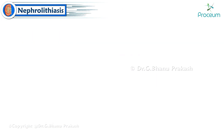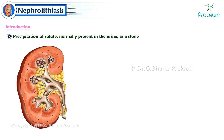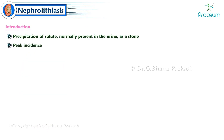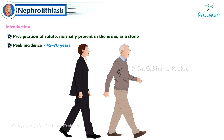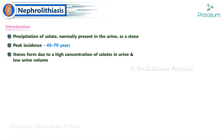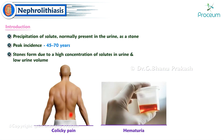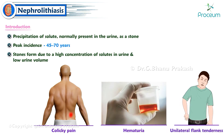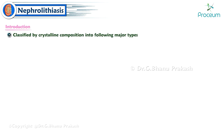Nephrolithiasis — kidney stones — is the precipitation of solute normally present in the urine as a stone. Peak incidence is 45 to 70 years. Kidney stones form due to a high concentration of solutes in the urine and low urine volume. They present with colicky pain and hematuria, often with unilateral flank tenderness.